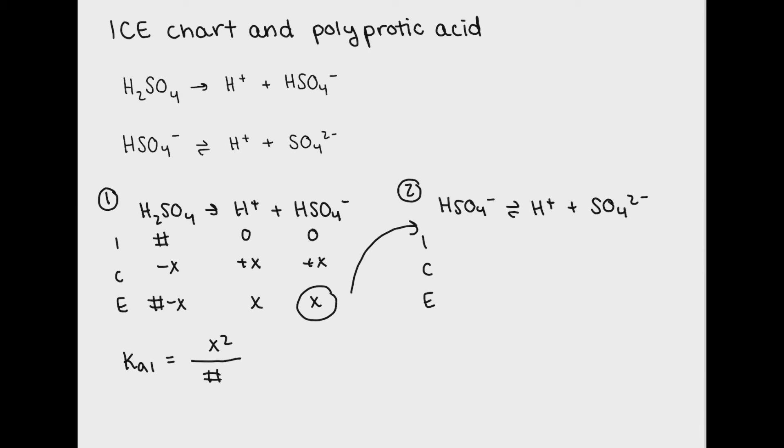Notice here that we've gotten a value for X for HSO4 minus. This is carried over into the second ICE chart. Here I'm just using Y as a different variable because I've already used X. Now our concentration of HSO4 minus dissociates and we get a second Ka expression.